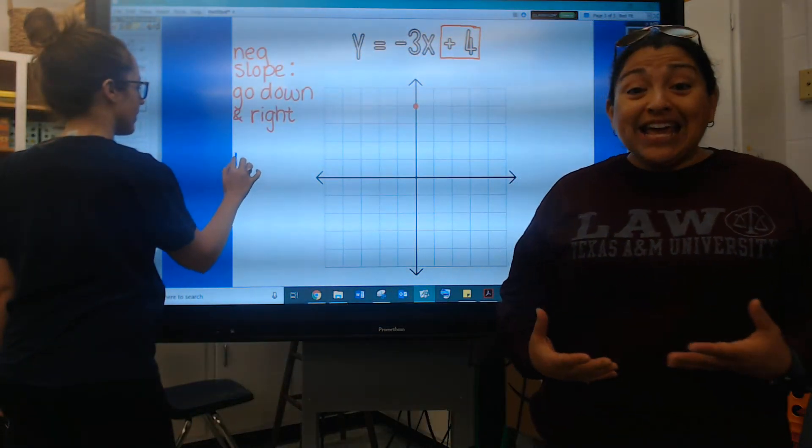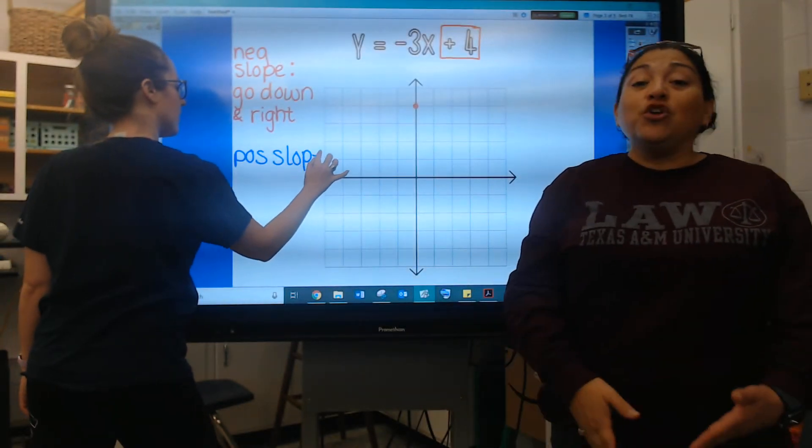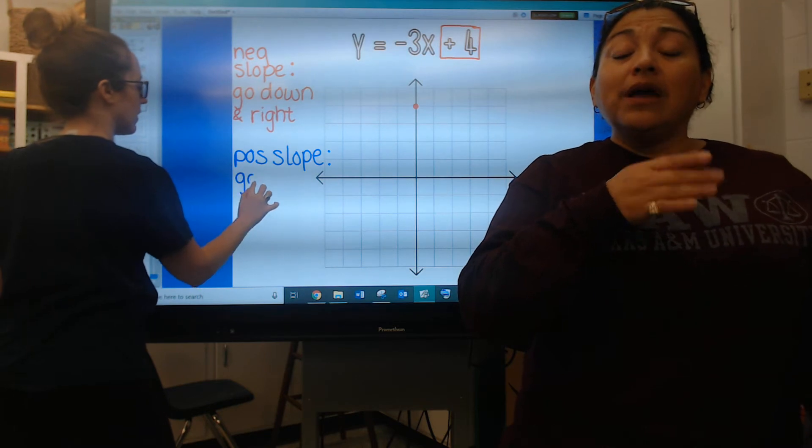All right if it so happens that this number is positive then you're going to start and you're going to count up and then to the right.